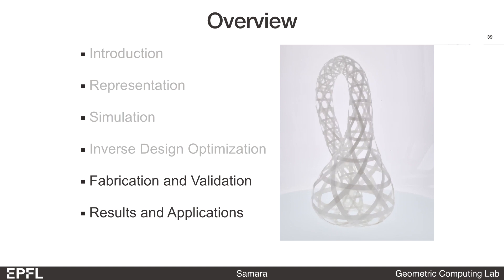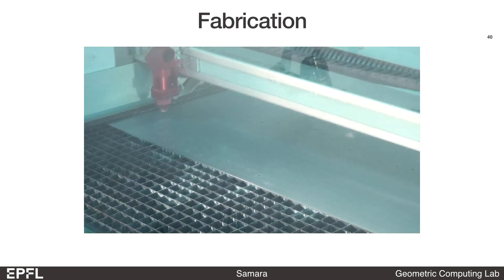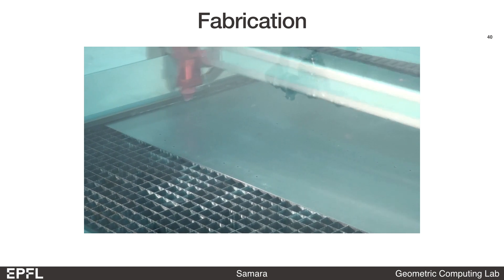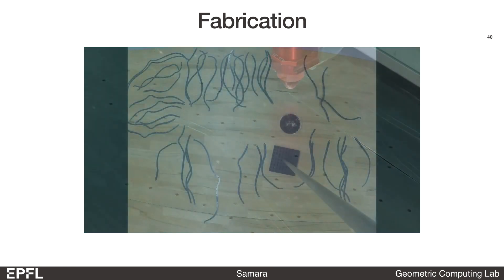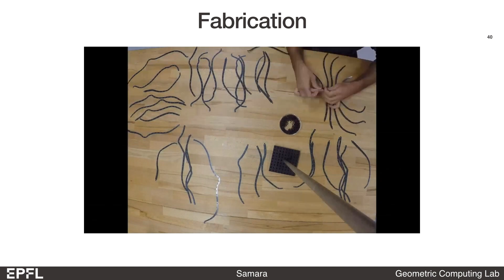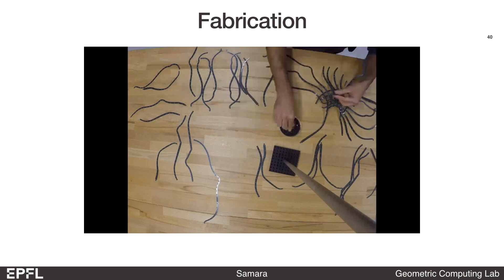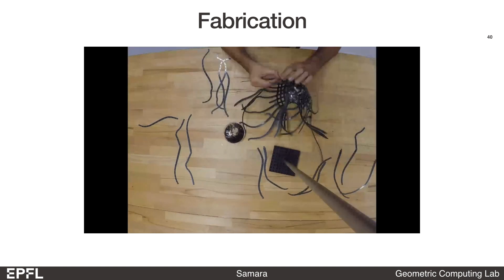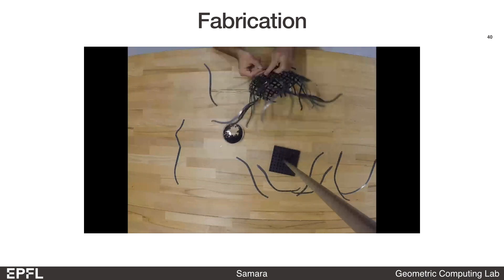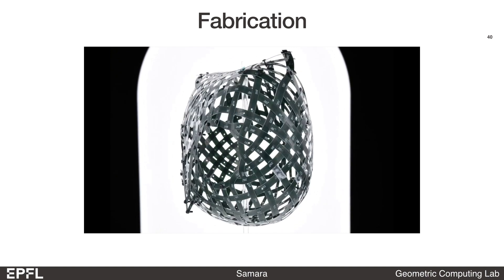Next, I would like to show the fabrication process and some results. We integrate the length and curvature given by the optimization algorithm to compute the planar ribbon pattern and send that to a laser cutting machine. We also engraved the crossing numbers on the physical ribbons and provided a visualization app to facilitate the weaving process. During the assembly, we used some temporary pins to fix the ribbons. This model took around 2 hours to weave.